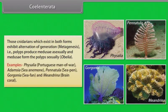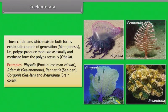Examples of Cnidarians: Physalia, also known as Portuguese man-of-war; Adamsia, also known as sea anemone; Pennatula, also known as sea pen; Gorgonia, also known as sea fan; and Meandrina, also known as brain coral.